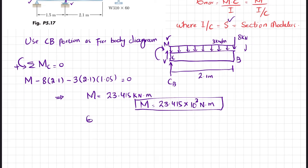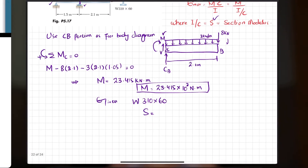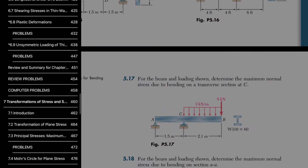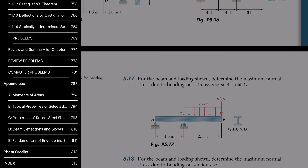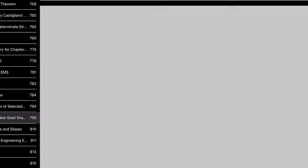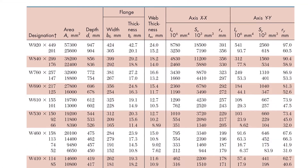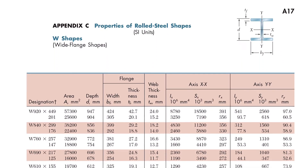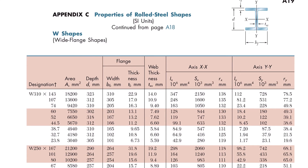We now need the section modulus. It is given that the beam is W310×60. We look up the section modulus from the property table in the appendix of Mechanics of Materials by Beer and Johnston, under Properties of Steel Rolled Sections. For W310×60, the section modulus S is 844×10³ mm³.